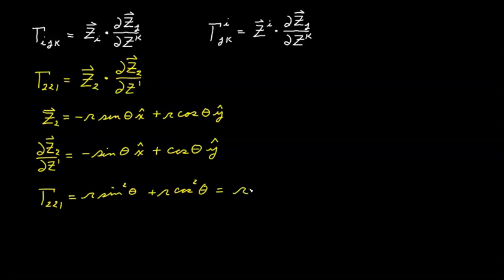These Christoffel symbols will always be a function of the individual coordinate values. In plane polar coordinates all Christoffel symbols should be functions of r and θ, and that's certainly true here — this Christoffel symbol is simply equal to r. This technique works fine but it can be a little tedious. The indexes can have values of one or two, meaning there are eight Christoffel symbols of the first kind and eight of the second kind, requiring us to repeat this process sixteen times. As it turns out, there's another formula that's much more convenient and easier to work with.